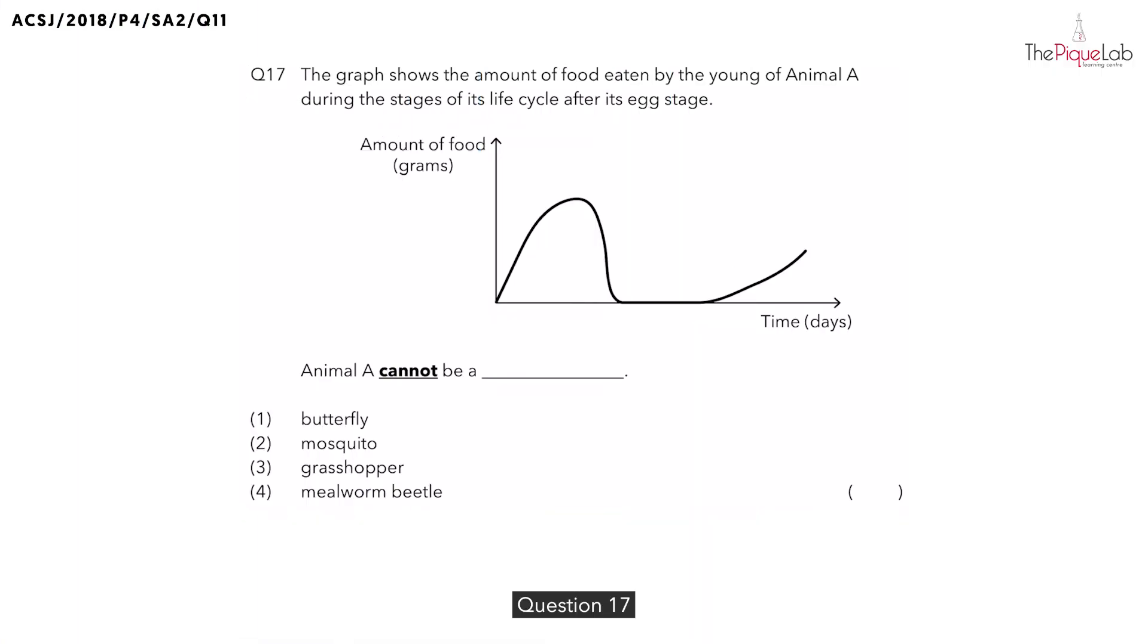Question 17. The graph below shows us the amount of food eaten by the young of animal A during the stages of its life cycle after its egg stage. In this question, they want us to find out what animal A cannot be. Now, in order to find out what animal A cannot be, we must first find out how many stages does animal A have in its life cycle.